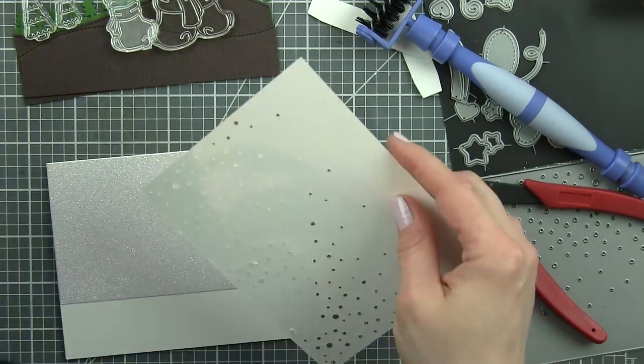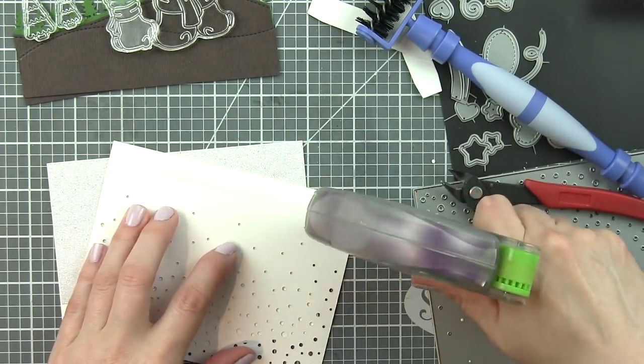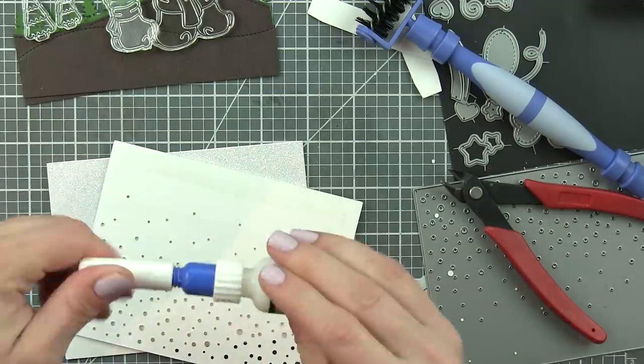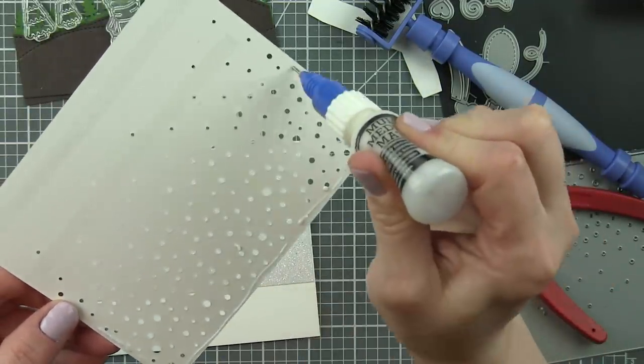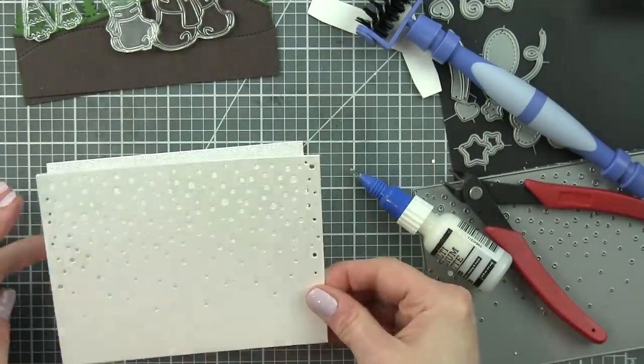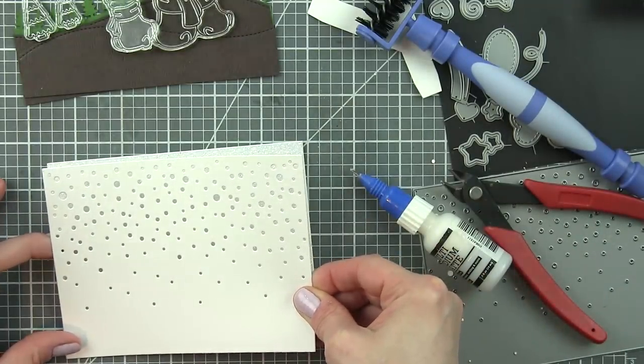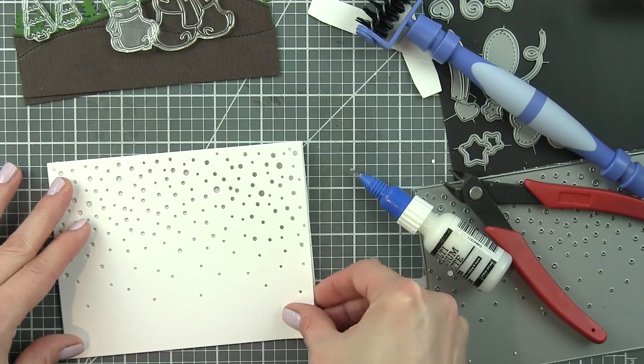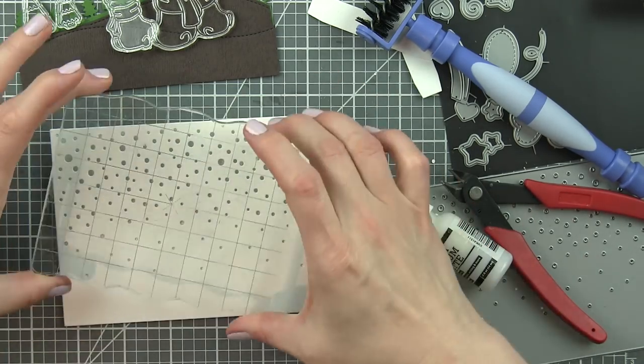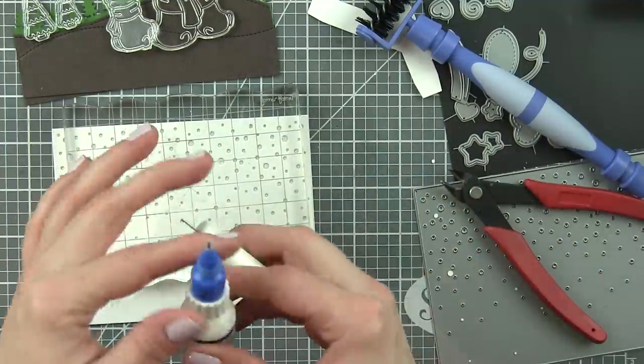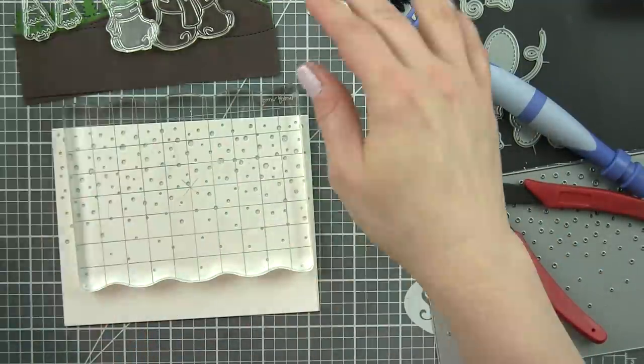And then I'm going to layer some of the white sparkle cardstock, this is also new, back behind where the snowfall is going to be on my card. You can see it doesn't go all the way down. I just want it to be back behind where you're going to see the falling snowfall.